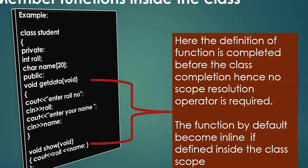To recap: a class is a simple data type, or in OOP terms, a blueprint for an object. A class contains data members and member functions under different visibility modes — private, protected, and public. Private and protected are the same for isolated classes except in inheritance derivations. Public members are accessible outside the class using the dot operator with an object. Definitions made within the class become inline; definitions outside require binding via the scope resolution operator.